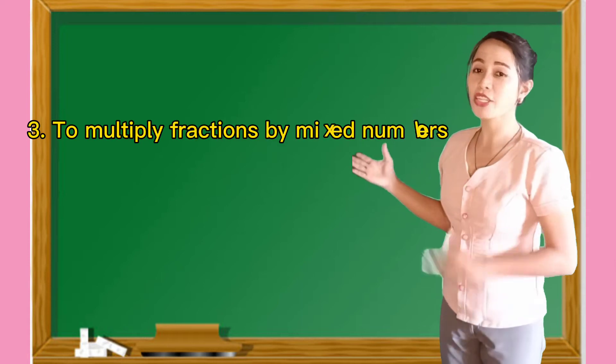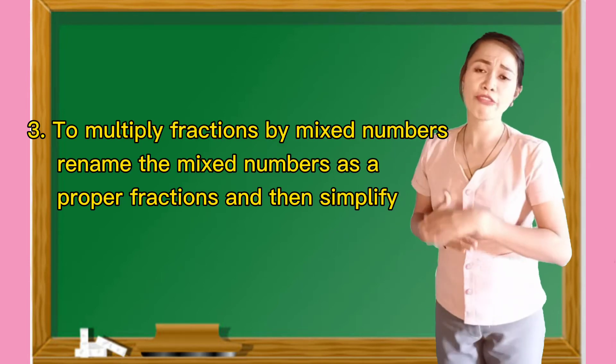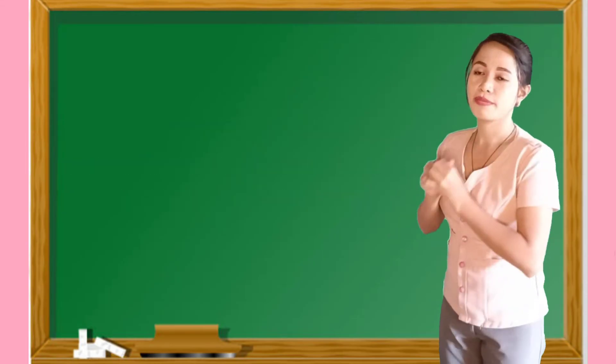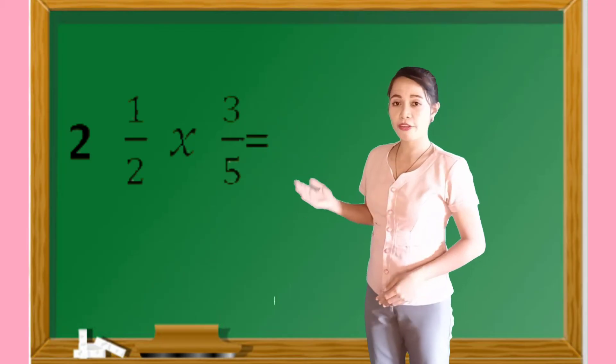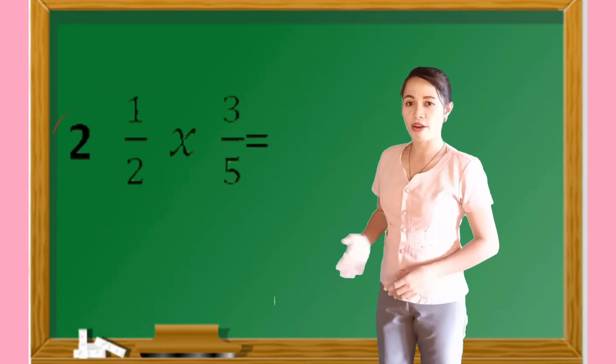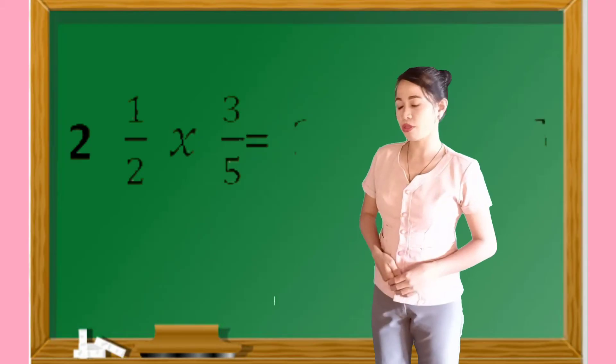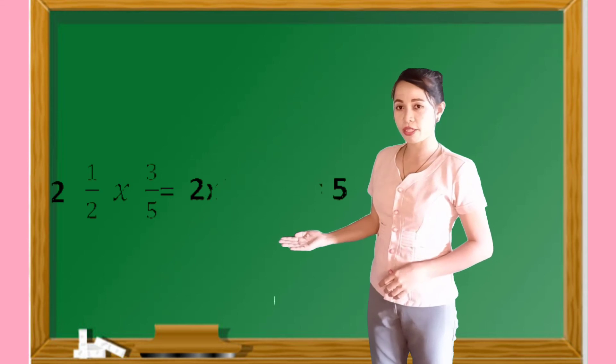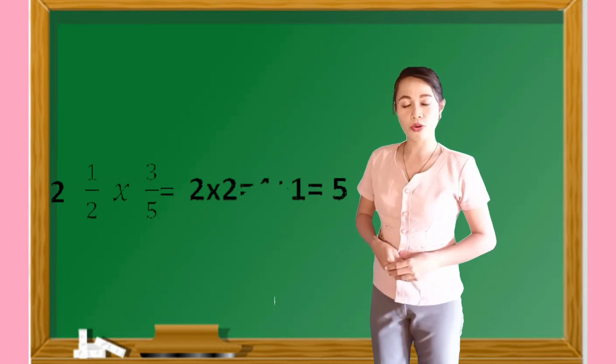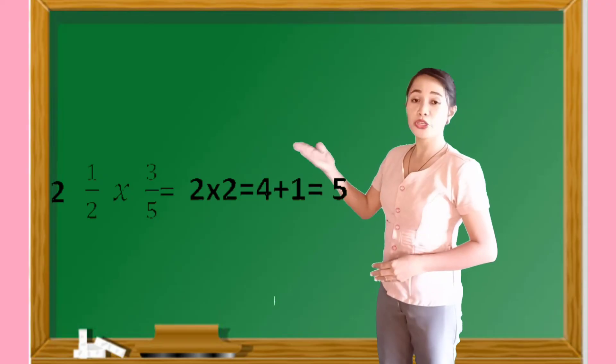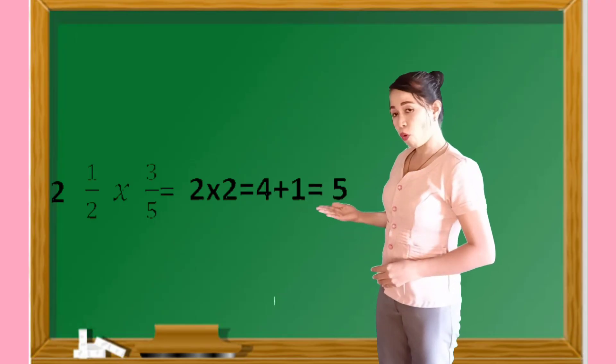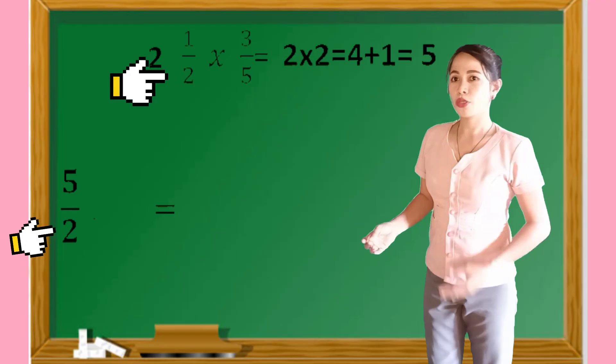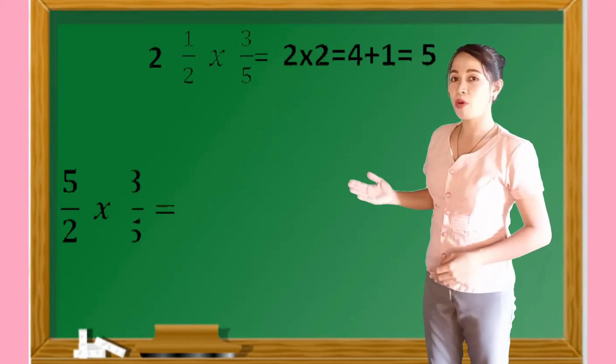Next, multiplying fractions by mixed number. In multiplying fraction by mixed numbers, we have to rename the mixed numbers as a proper fractions and then simplify. For example, two and one-half times three-fifth. Our mixed number here is two and one-half. In order to rename this one into proper fraction, we have to multiply the denominator and the whole number. So our whole number here is two and our denominator here is two. So two times two is equals to four. After that, we have to add their numerator. So the numerator here is one. So four plus one is equals to five. And copy the denominator which is two. So two and one-half is equals to five over two.